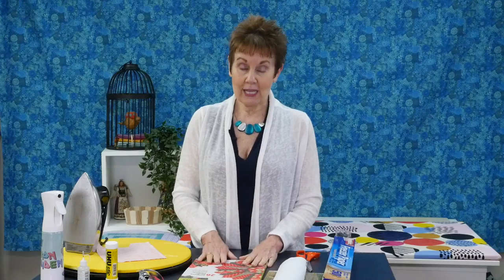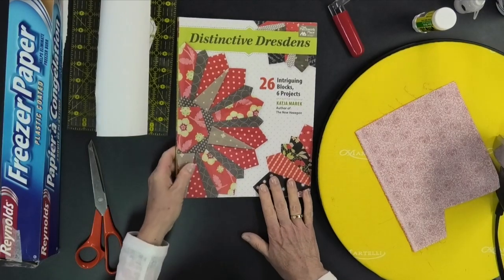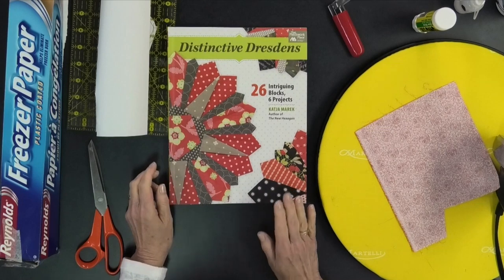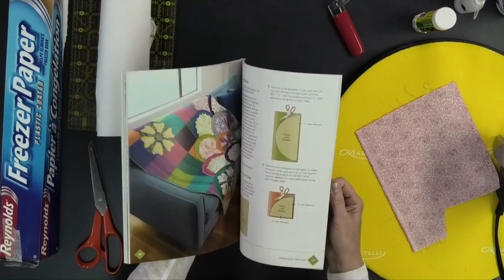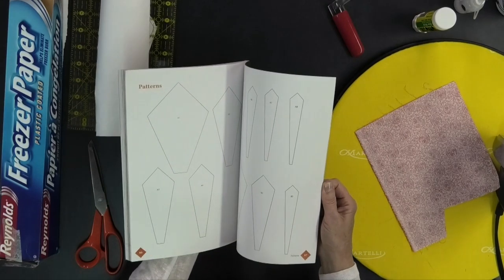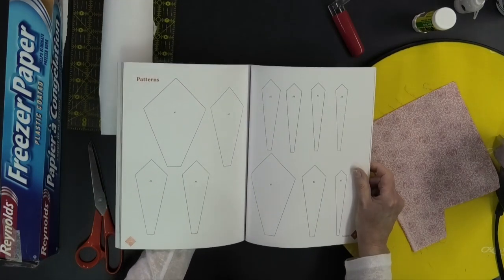I was looking at this book called Distinctive Dresdens by Martingale. It's by Katja Marek, and thanks so much to Martingale for sending me this copy. I'm not doing a book review today, but I was going through this and there's all these different blocks you can make. In the back of the book there are the templates that you need to make to cut out the fabric pieces to make the different blocks.